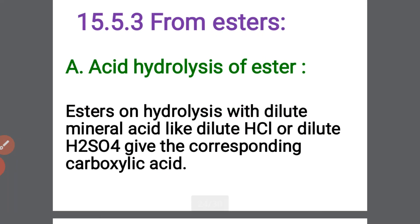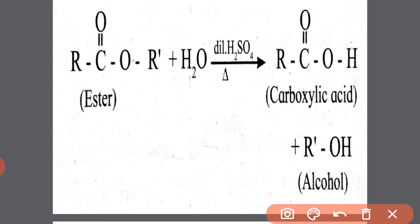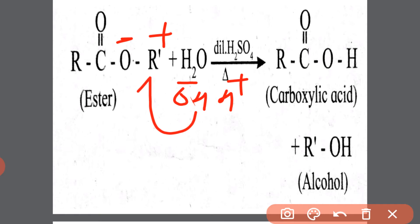Next, from esters. The first method is acid hydrolysis of esters. Esters on hydrolysis with dilute mineral acid like dilute HCl or dilute H₂SO₄ give the corresponding carboxylic acid. Here also, H₂O means OH⁻ and H⁺. Oxygen is negatively charged and carbon is positively charged. So OH⁻ will combine with the positive carbon and H⁺ will combine with the negatively charged oxygen atom. The bond between oxygen and the alkyl group will break, and the product formed is R–C(=O)–OH with byproduct R'OH, that is alcohol.